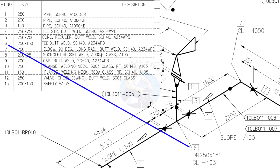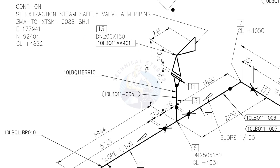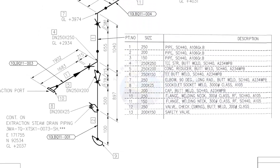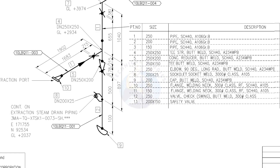Item number 6 is a reducing T. Item number 13 is a safety relief valve. Being familiar with valve symbols will be a big advantage for you. Item number 4 is a straight T. Item number 5 is a concentric reducer. Item number 8 is a socket weld branch. Item number 9 is a cap.